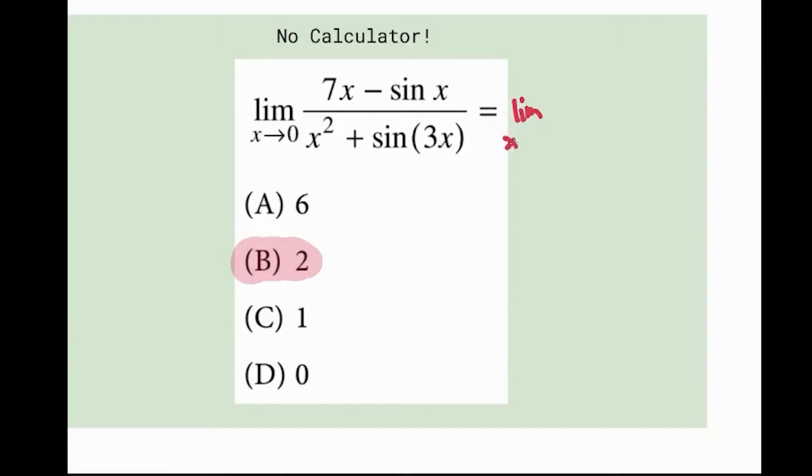So right away, you should plug in zero for X. And you notice you get zero on top and zero on the bottom. So that means a light bulb should be going off in your head, that you need to use L'Hopital's rule. So that's what we're going to do.